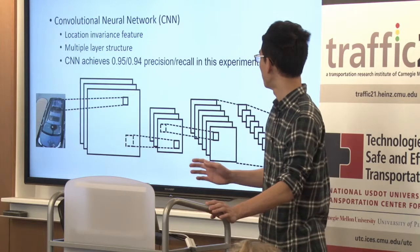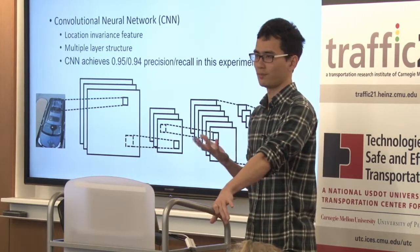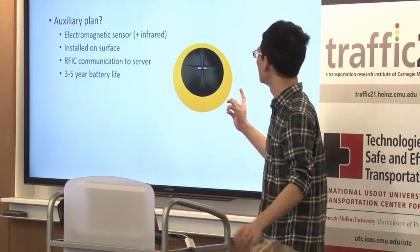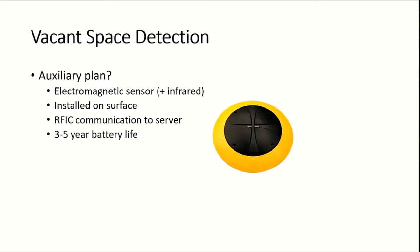As mentioned, our camera occasionally shuts down, so we prepared an auxiliary plan: an electromagnetic sensor with short-wave infrared. This device can be installed on the surface and communicate with the central server so we can exactly know if there's a car over a given spot. It has a battery life constraint of about three to five years. Although we haven't applied it to all spaces in our experiment section yet, we have this preparation in place.